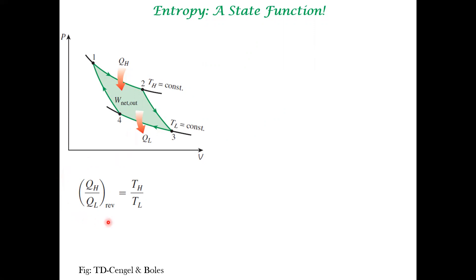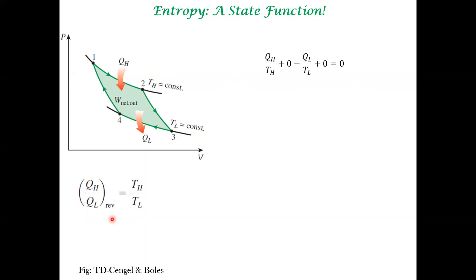Eventually, all this analysis led to this equality: QH is the heat that is taken up from the hot reservoir, and QL is the heat that is rejected to the cold reservoir, and these are the temperatures of the two relevant reservoirs. For a reversible cycle — which is the Carnot cycle — we proved this in the past few lectures. Another way of writing this is by rearranging and introducing two zeros here.